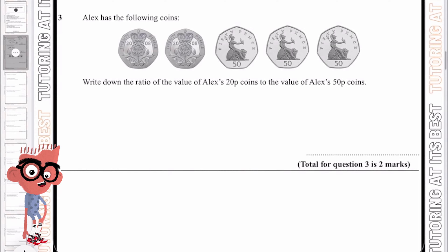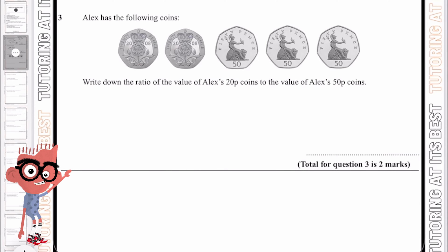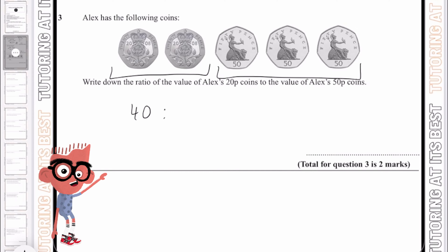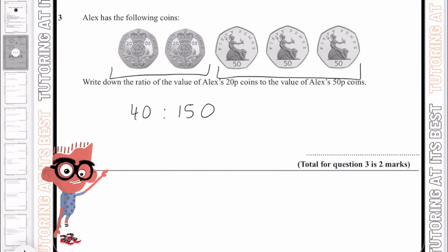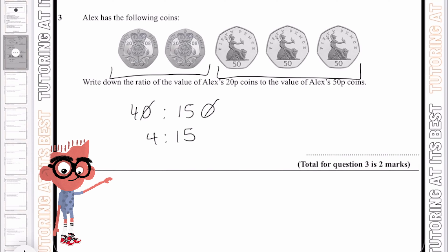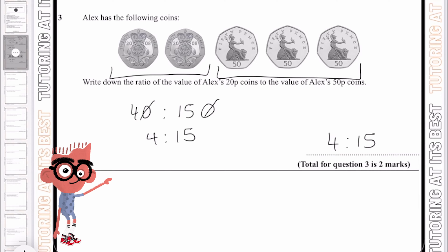So let's now dive into question 3. Alex has the following coins, and we need to write the ratio of the value of Alex's 20p coins to the value of Alex's 50p coins. Considering we have two 20p coins, that gives us 40p, and three 50p coins gives us 150p. The first thing I would do is take away the zeros, giving us 4 to 15. Then I would check: is there any way we can simplify 4 to 15? In this case we can't, so we'll leave it as 4 to 15.